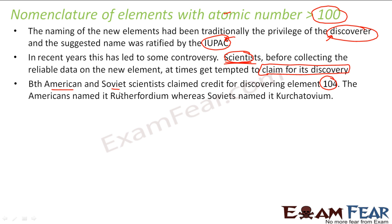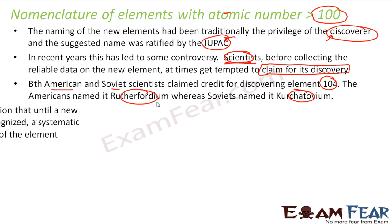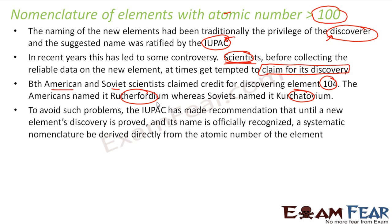The American scientist named it Rutherfordium, and the Soviet scientist named it Kurchatovium. They both claimed the element and there was a conflict because IUPAC had not even ratified either name. They both claimed the element and gave it different names, which created confusion.